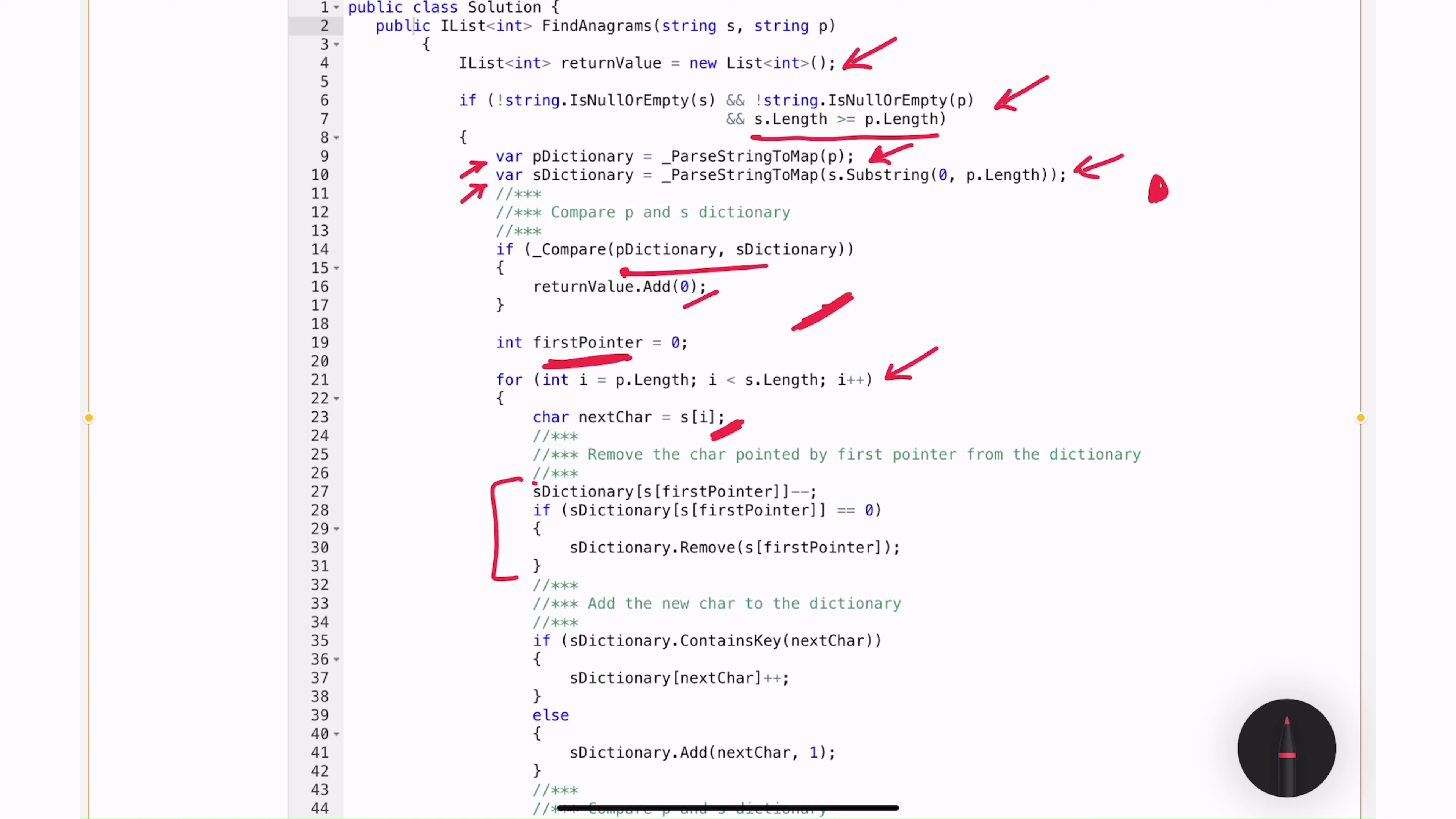In this section, I am removing that character from my S dictionary. So I am decrementing the count of that character in S dictionary and if the count is equal to 0, it means there are no more characters left in the string. So I'm removing that completely from the S string. This will reduce the number of iterations that I have to go through when I'm doing the comparison between the two dictionaries.